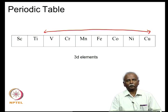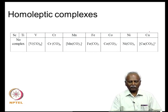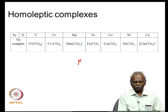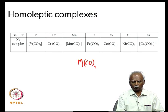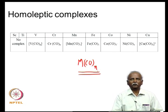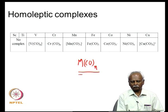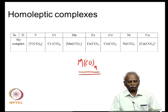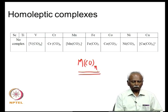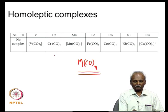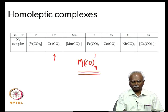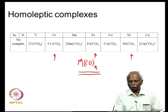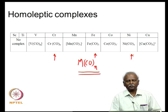All of them are capable of forming homoleptic or M(CO)n complexes — complexes which have many copies of the same ligand in the coordination sphere of the metal. You will notice that for all metals with an even number of electrons — that is chromium, iron, and nickel — there are no charges on them. Since carbon monoxide is a neutral ligand, n carbon monoxides do not add any charge to the metal.